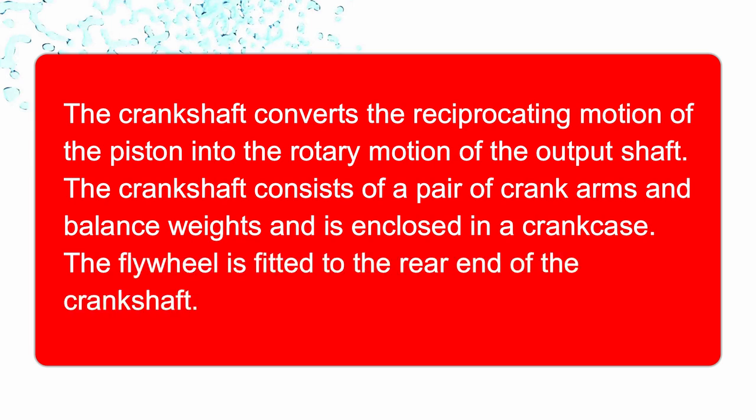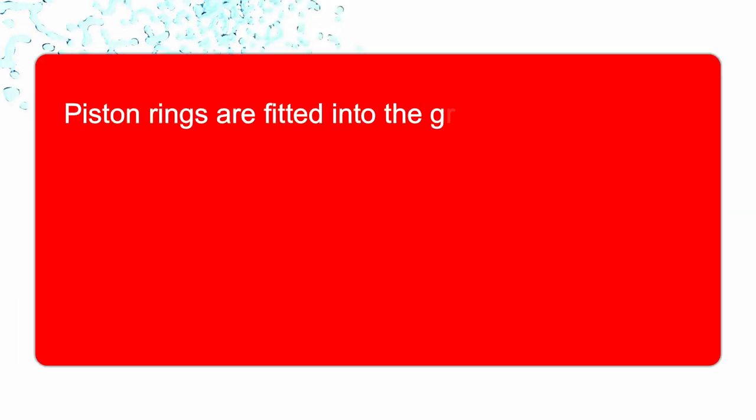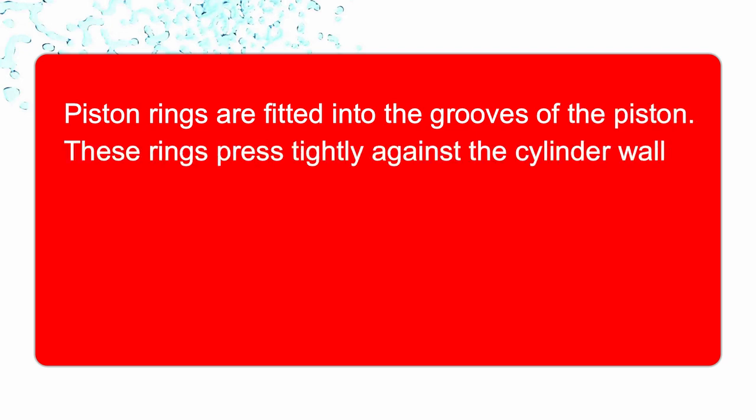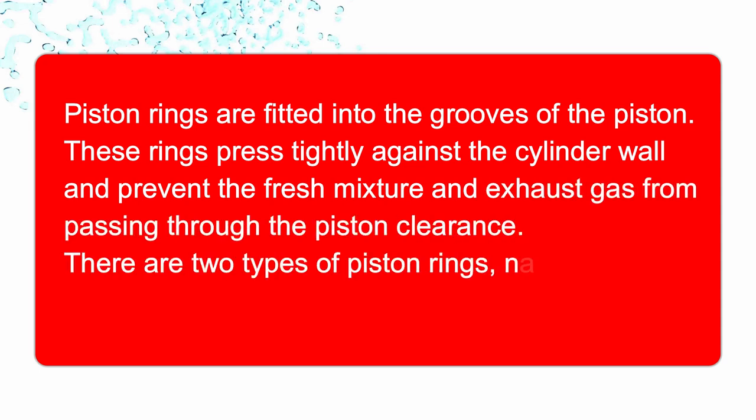Next component is piston rings. Piston rings are fitted in the grooves of the piston. These rings press tightly against the cylinder wall and also prevent the fresh mixture and exhaust gas from passing through the piston clearance. There are two types of piston rings: compression rings and oil rings.